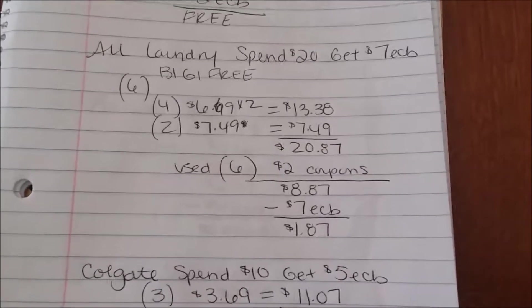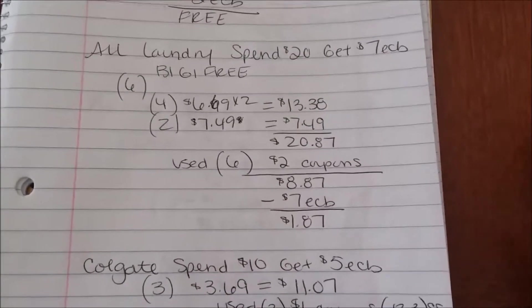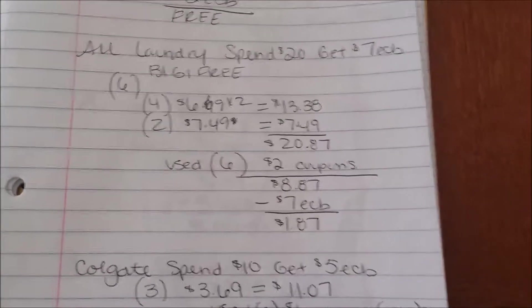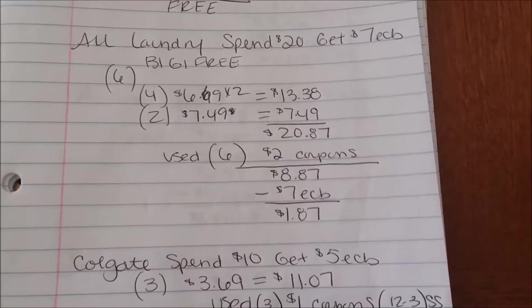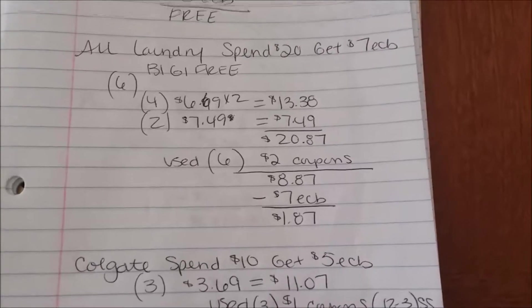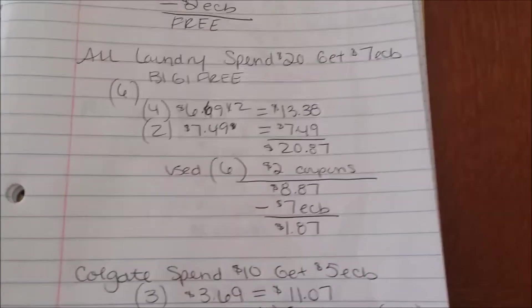Make sure you guys run out and go get that. The $2 coupons are on coupons.com. CVS allows you to use a coupon on a free item, it's in their coupon policy. No coupons beeped for me, all six of them went through. So yeah, if you guys need laundry soap make sure you run out to CVS.